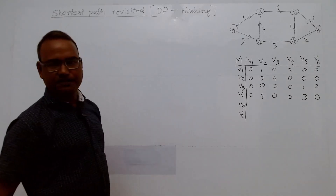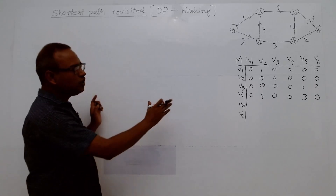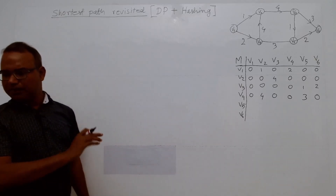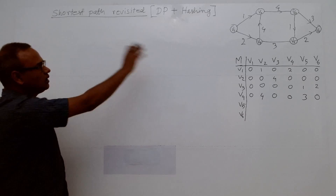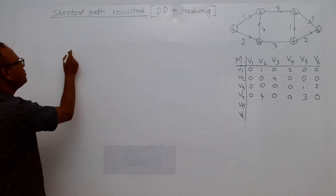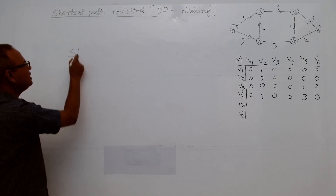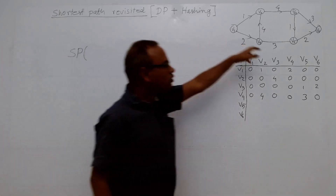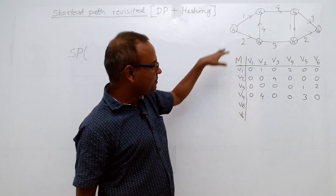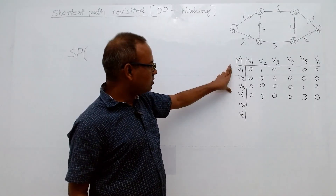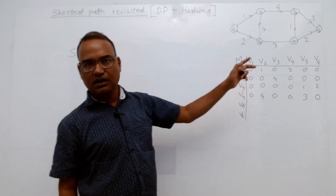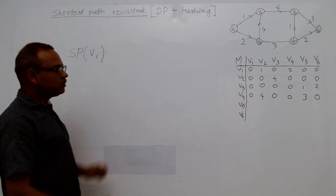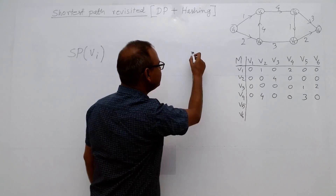How do we solve this problem? We have to write a recursion — same as the previous problem. I am giving it the same name from the last lecture: sp (shortest path). Should we compute the sub-problem value for every vertex? If we need the shortest path for vertex vi, we use a memory table.